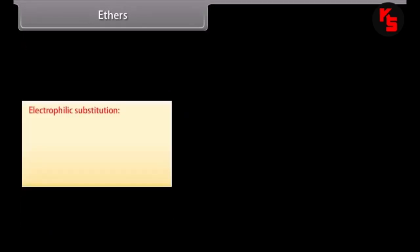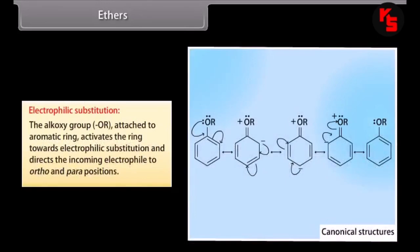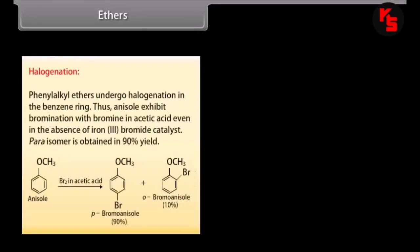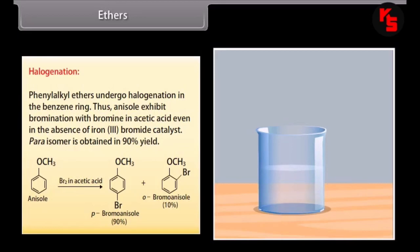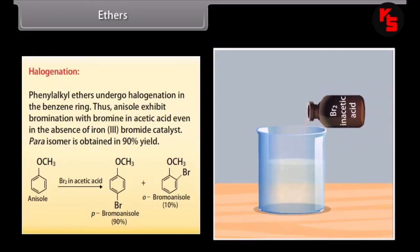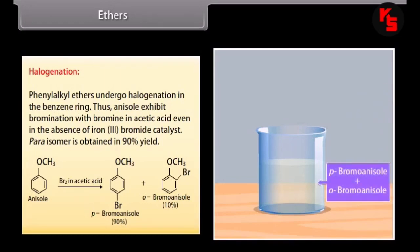Electrophilic substitution: the alkoxy group attached to an aromatic ring activates the ring towards electrophilic substitution and directs the incoming electrophile to ortho and para positions. Halogenation: phenyl alkyl ethers undergo halogenation in the benzene ring. Thus, anisole undergoes bromination with bromine in acetic acid even in the absence of an iron(III) bromide catalyst; the para-isomer is obtained in 90% yield.